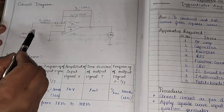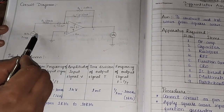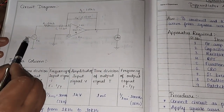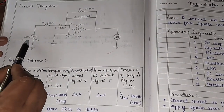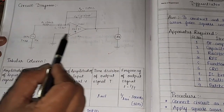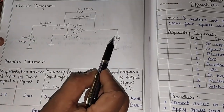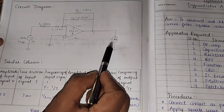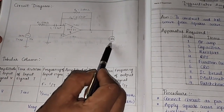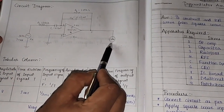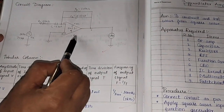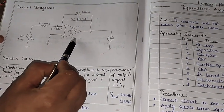What kind of input do we apply? At the input, we have to give a square wave, and at the output we will obtain spikes. Now let's see how to construct this circuit on a breadboard.